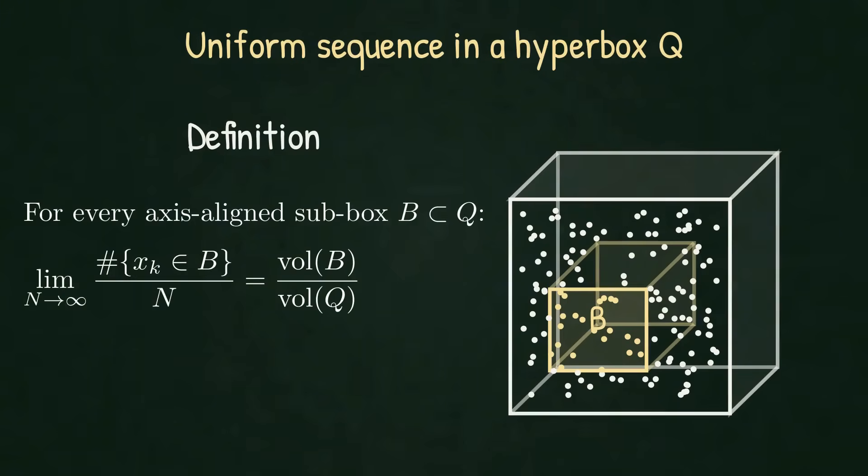Uniform in Q means that this proportion has a limit and it equals the share of volume of B inside Q. In one dimension, length guided the proportions. Here, volume plays the same role.